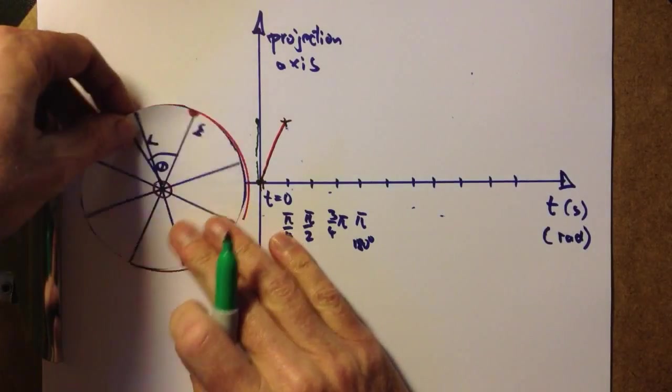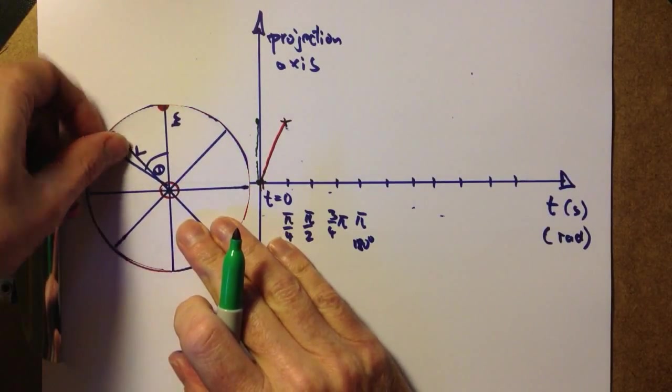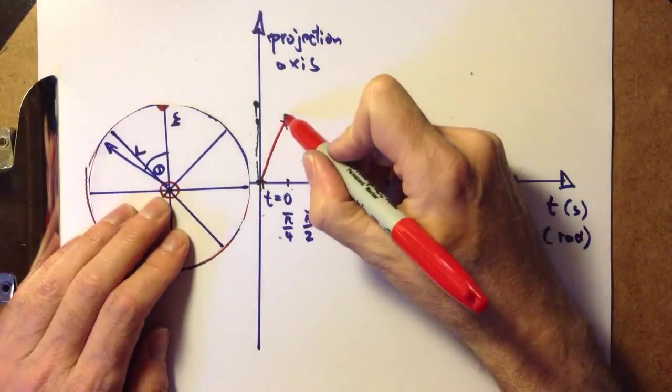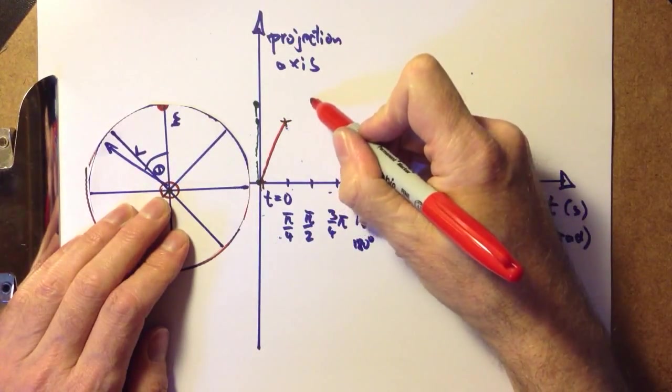We're moving further, another 45 degrees, moving up on the projection axis to this point. And with reference to the timescale here.